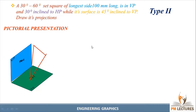Let us read the question. The 30-60 degree set square of long side 100 mm is in VP and 30 degrees inclined to HP, while its surface is 45 degrees inclined to VP. Draw its projection. This is the question given for us.